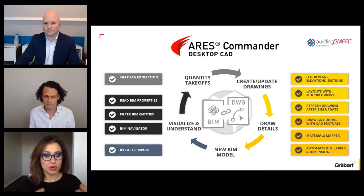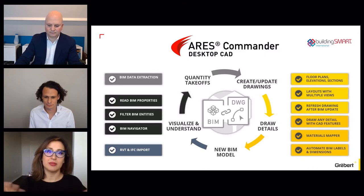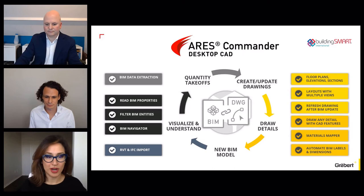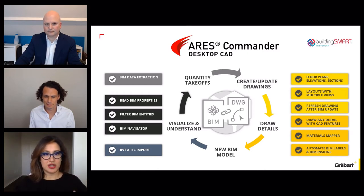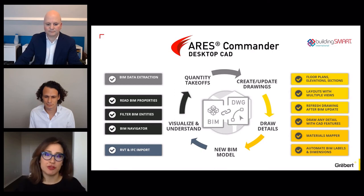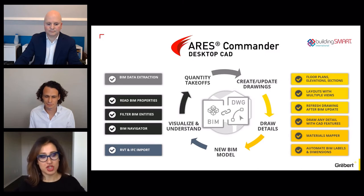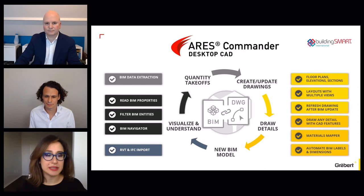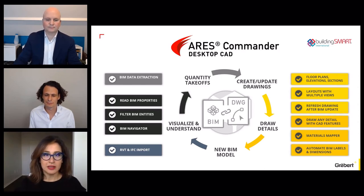Once you update the BIM model, you don't have to go back and manually update everything. Without ARES Commander, I used to go manually and update all these annotation dimensions at many architecture firms. With ARES Commander, you don't need to do that because all these blocks, title blocks, and dimensions automatically get updated on all the drawings — you basically don't lose any of your BIM intelligence. I also like how intuitive and user-friendly it is to work inside ARES Commander. BIM models have so much data and it's very easy to get lost, but I found it pretty easy to navigate the information and BIM objects, and you can even access data that is not visible, like the thermal efficiency of a wall.